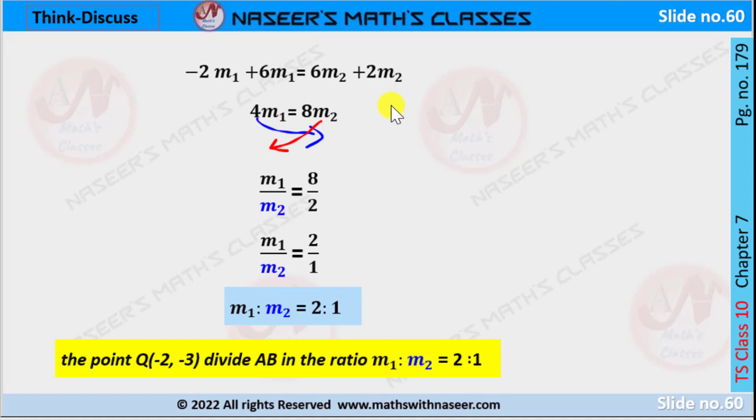In LHS, and in RHS by adding 6m₂ + 2m₂ we get 8m₂. Now to find m₁:m₂, we have to transpose m₂ from RHS to denominator of LHS, and next we transpose 4 from LHS to the denominator of RHS.